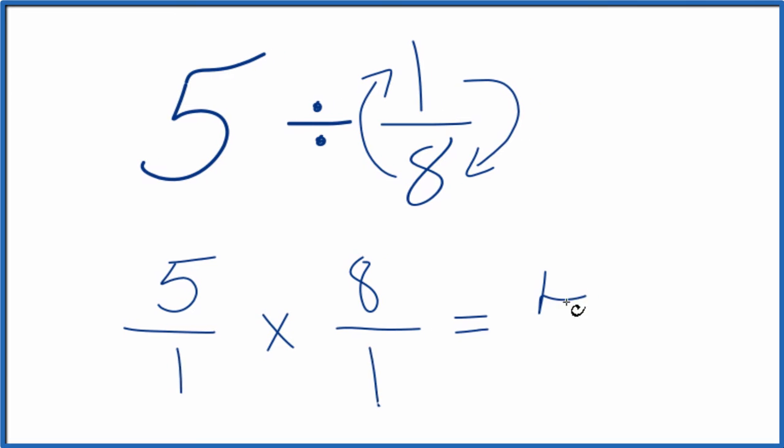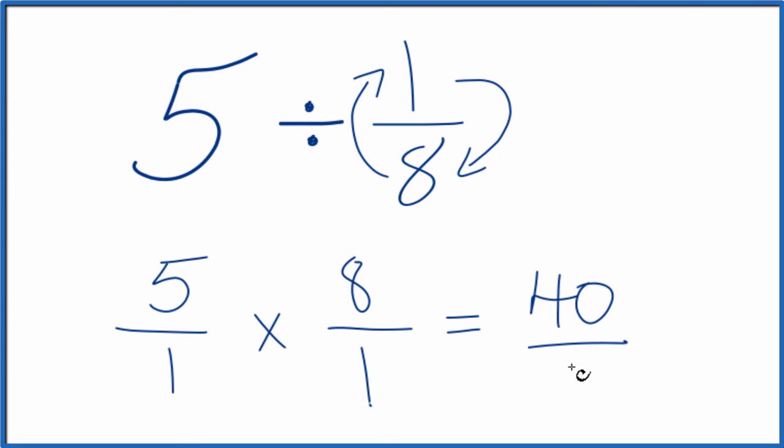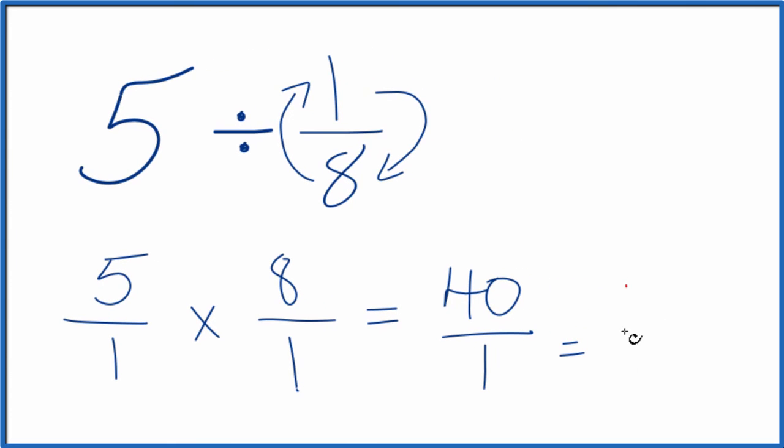5 times 8 is 40, and 1 times 1 is 1. So 40 divided by 1, that's just 40. So 5 divided by 1 eighth equals 40.